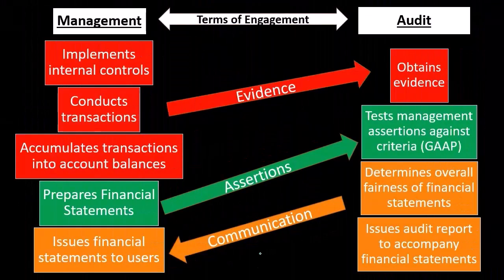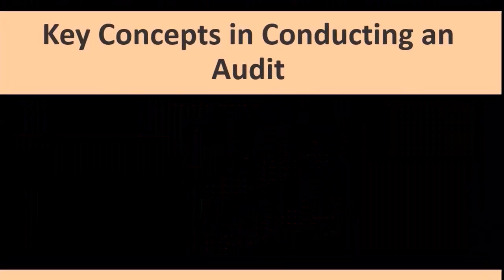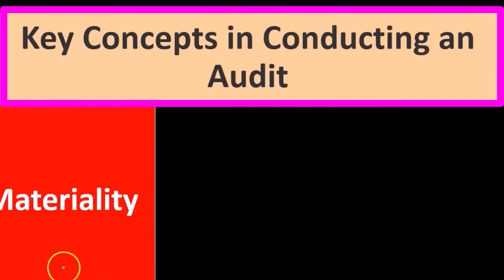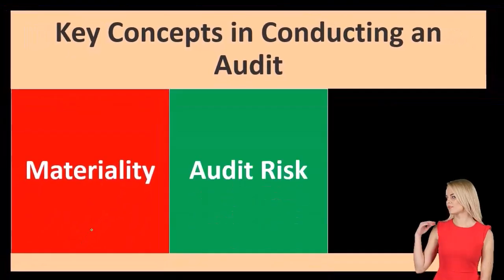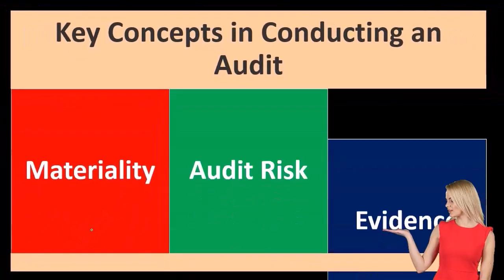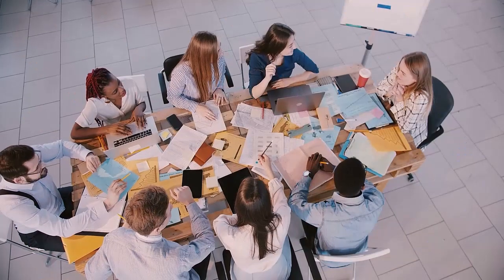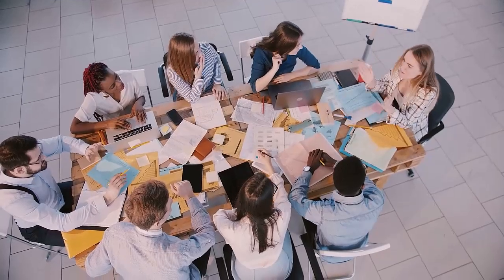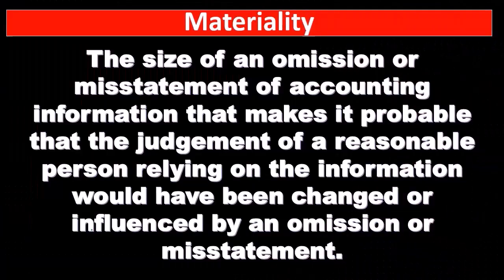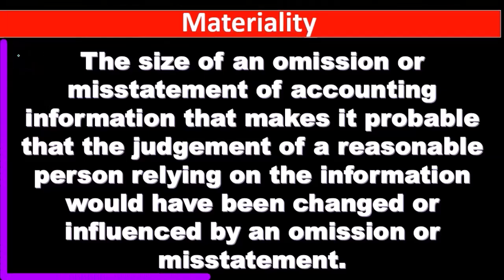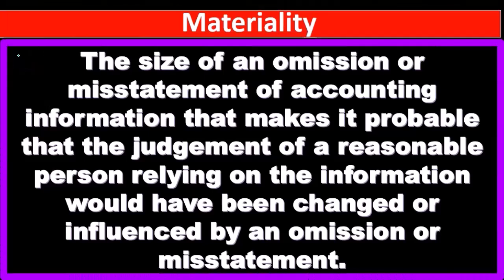Key concepts in conducting an audit are materiality, audit risk, and evidence. These are going to come up all the time, so we want to have a firm grasp of them. Let's start with materiality: the size of an omission or misstatement of accounting information that makes it probable that the judgment of a reasonable person relying on the information would have been changed or influenced by the omission or misstatement.